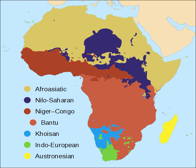In addition, Africa has a wide variety of sign languages, many of which are language isolates. The total number of languages natively spoken in Africa is variously estimated — depending on the delineation of language versus dialect — at between 1,250 and 2,100, and by some counts at over 3,000. Nigeria alone has over 500 languages, according to the count of SIL Ethnologue, one of the greatest concentrations of linguistic diversity in the world.